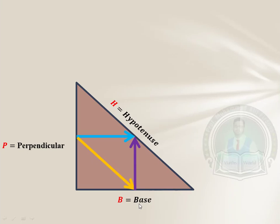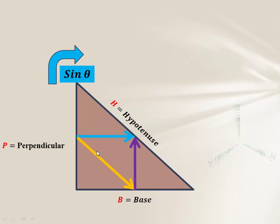We start with sine theta. You can see that the sine theta color, the blue color, shows that it starts with perpendicular and ends at hypotenuse. So sine theta equals perpendicular over hypotenuse. It's just that simple.